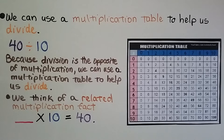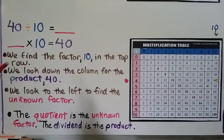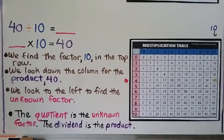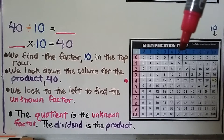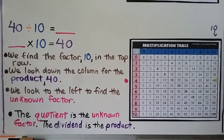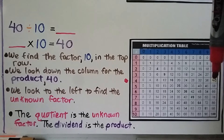Our problem is 40 divided by 10. Because division is the opposite of multiplication, we can use a multiplication table. We think of a related multiplication fact: some number times 10 is equal to 40. We find the factor 10 in the top row of the table, then look down that column for the product 40.